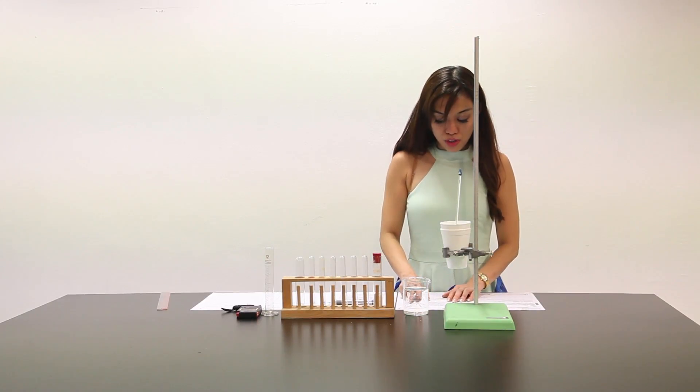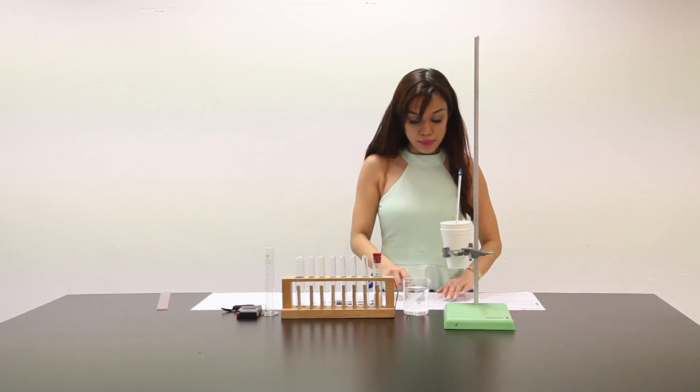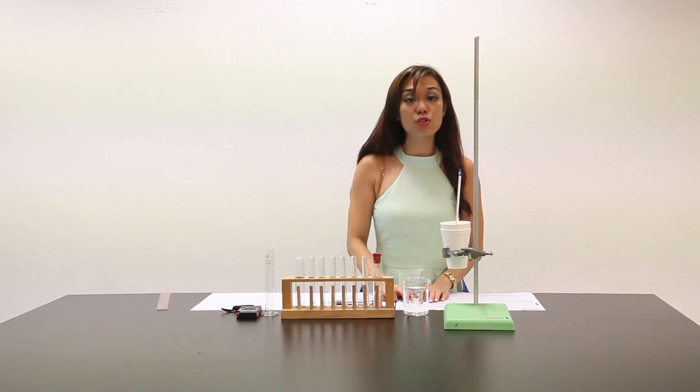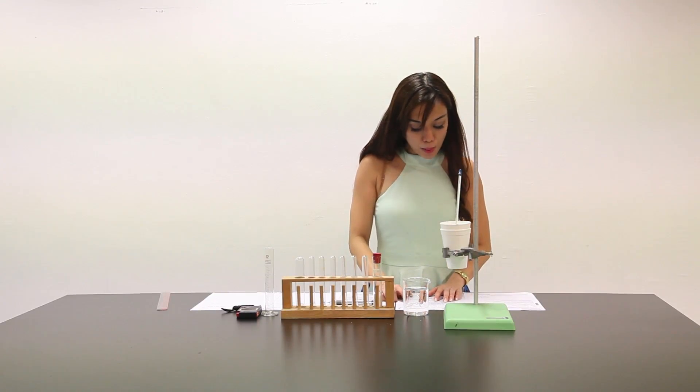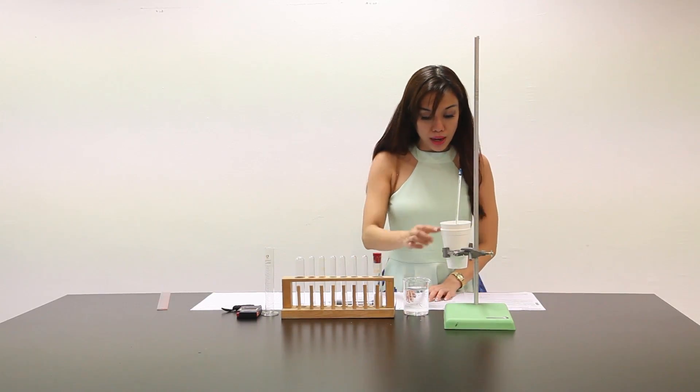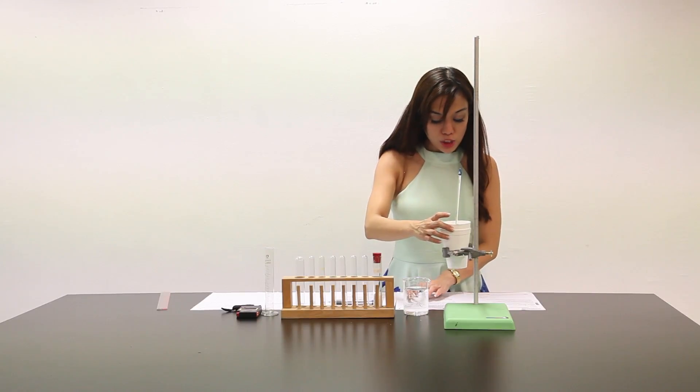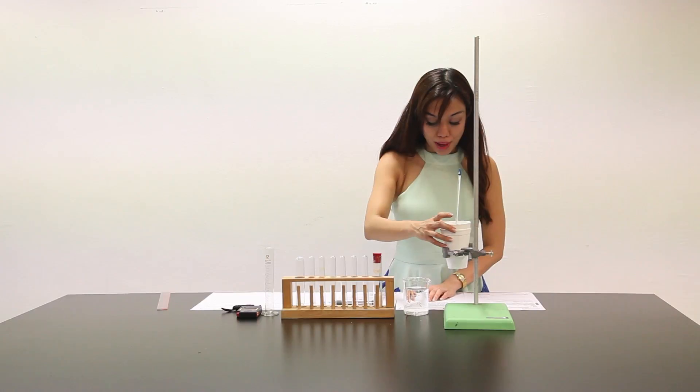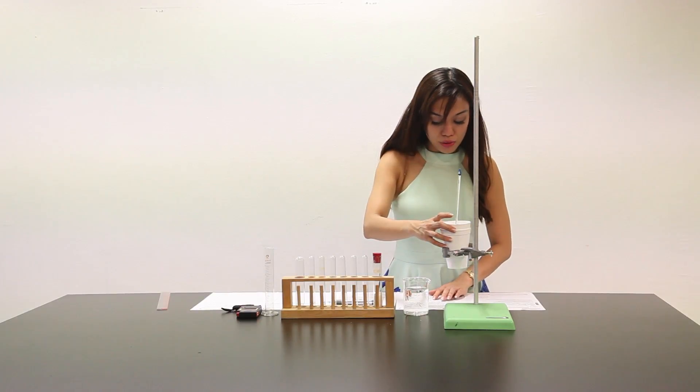You will measure the variation in the temperature of a sample of water at time intervals before and after a known mass of P is added to the water. The experiment is performed in a styrofoam cup placed inside a second styrofoam cup as shown in figure 1.1. The second cup is held using a retort stand and clamp to prevent it from falling over.